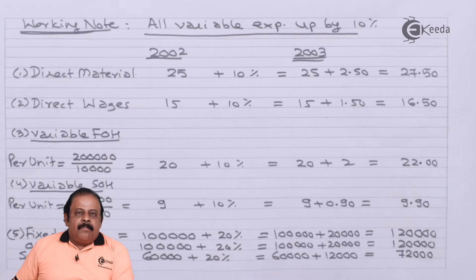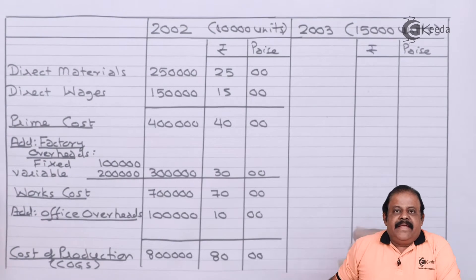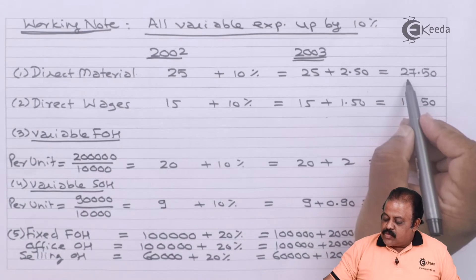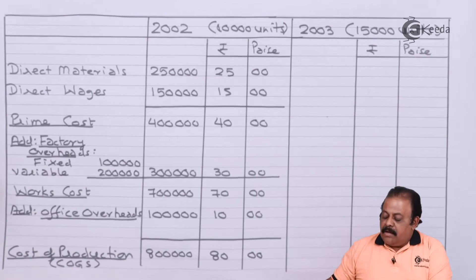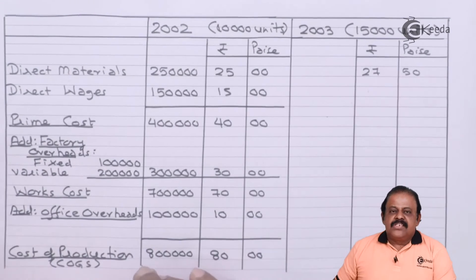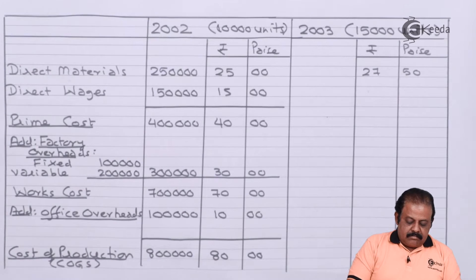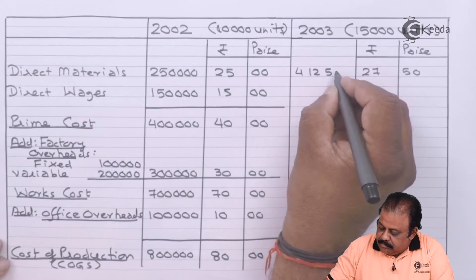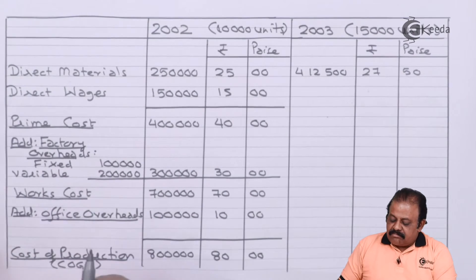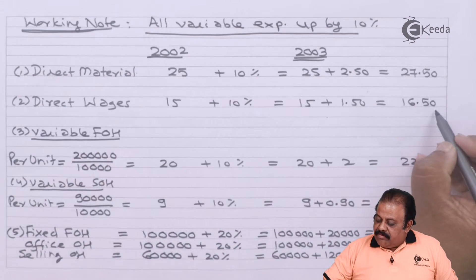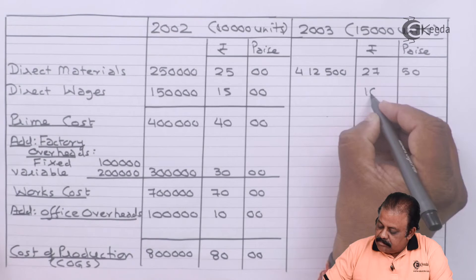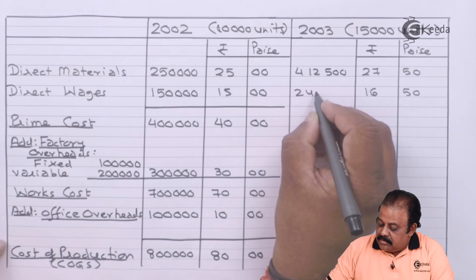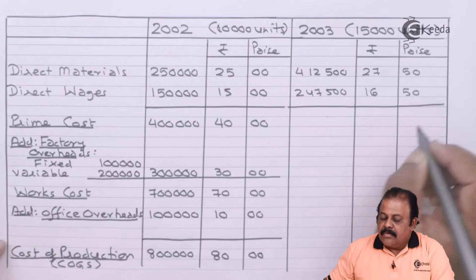Now we can complete the cost sheet for next year. Next year output is 15,000 units. Direct material per unit is ₹27.50 — total: ₹4,12,500. Direct wages per unit is ₹16.50 — total: ₹2,47,500. We can now get prime cost.